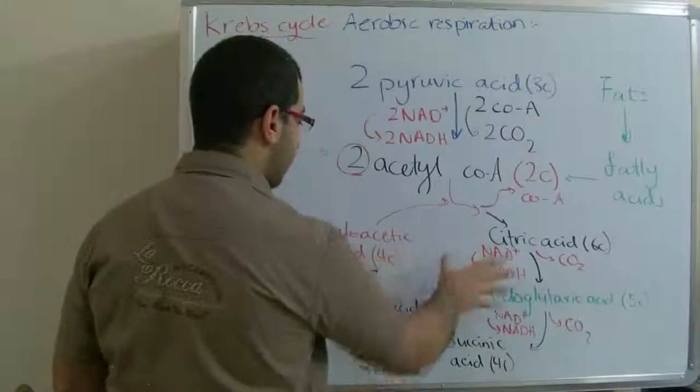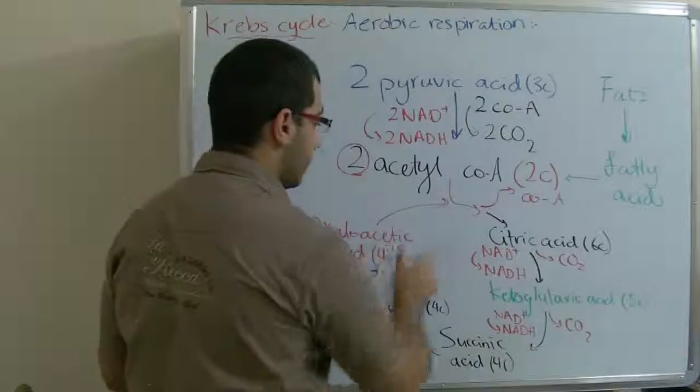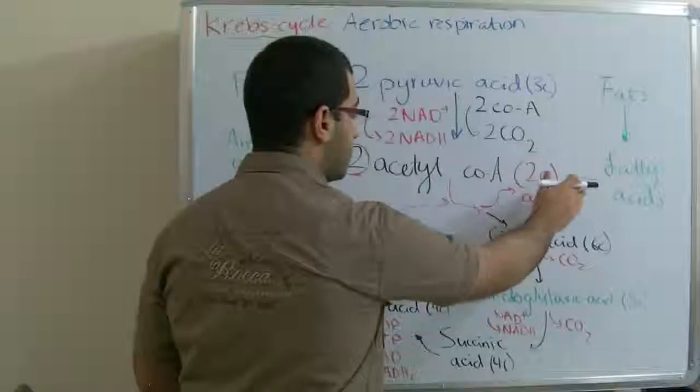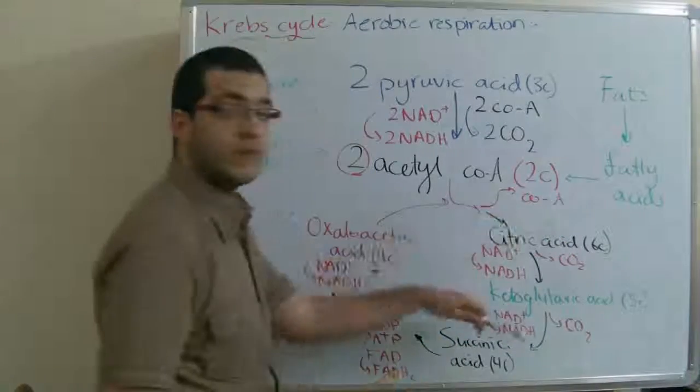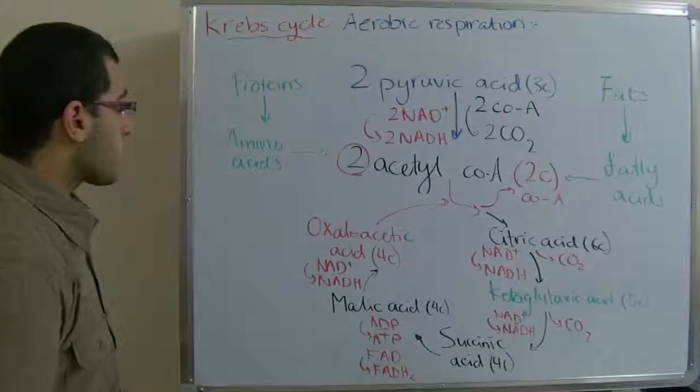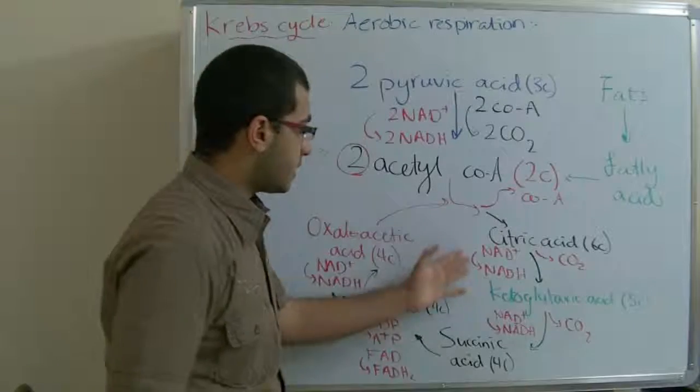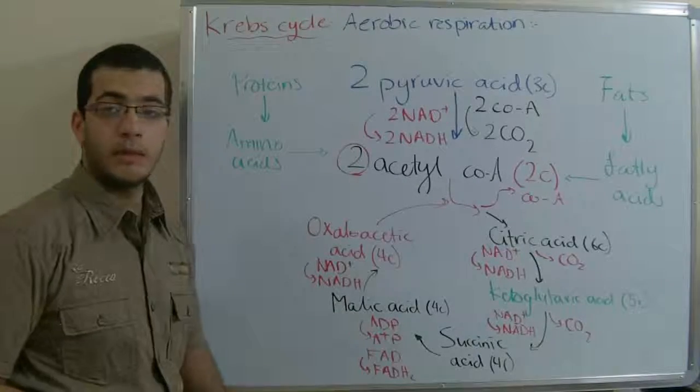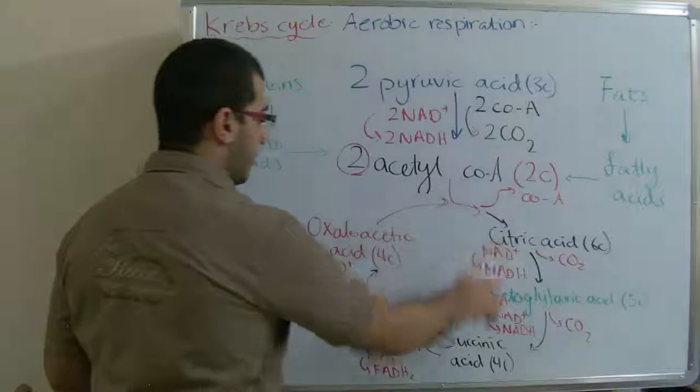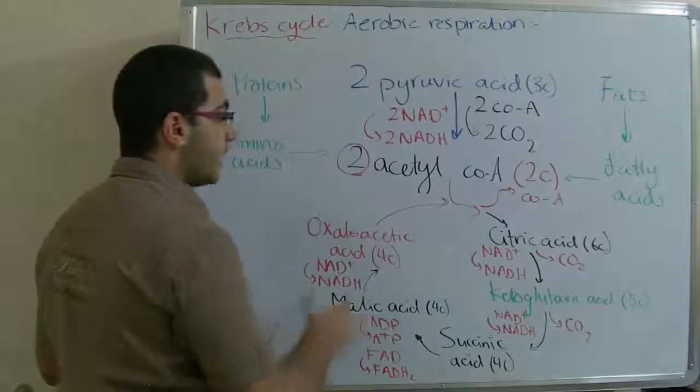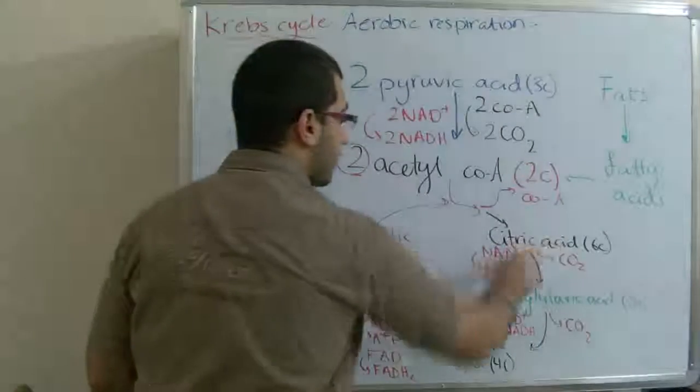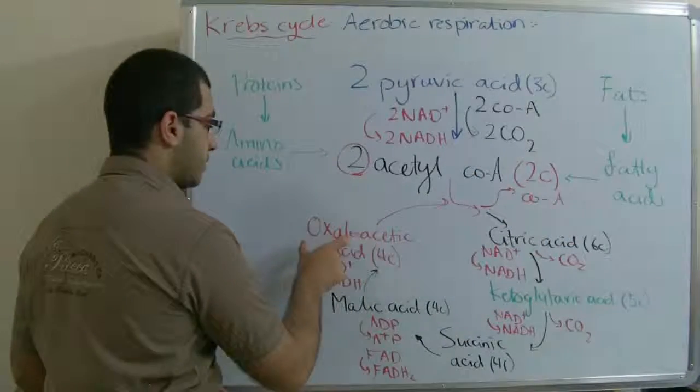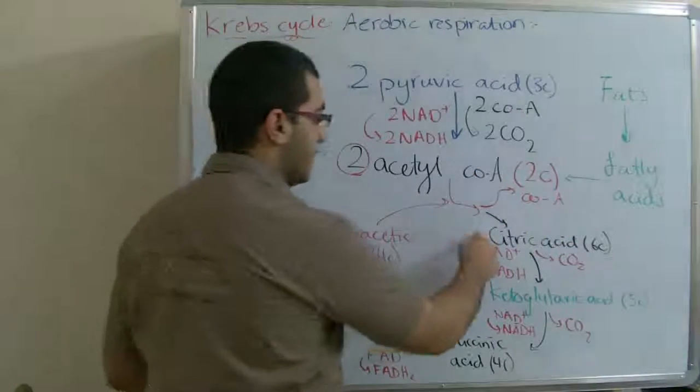This cycle is the Krebs cycle, the circle down here. After the first CoA finishes the cycle, the other one joins the cycle. So the products of NAD+, FAD, and ADP are doubled, and so it's repeated twice. It's called the citric acid cycle because whenever a CoA joins the cycle it combines with the oxaloacetic acid to form the citric acid.